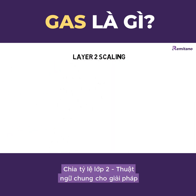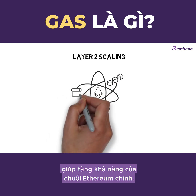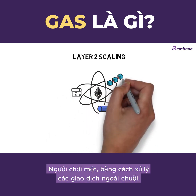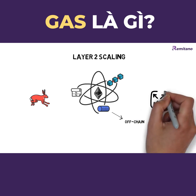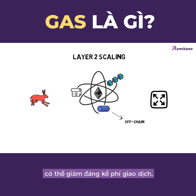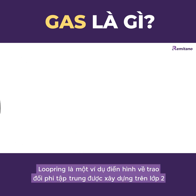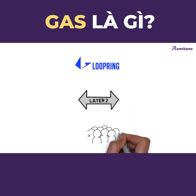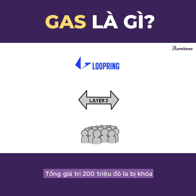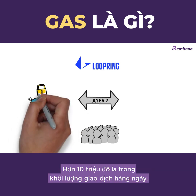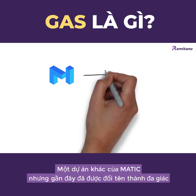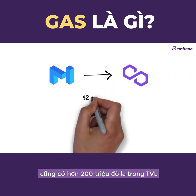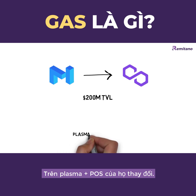Layer 2 scaling is a collective term for solutions that help increase the capabilities of the main Ethereum chain — Layer 1 — by handling transactions off-chain. Besides improving transaction speed and throughput, Layer 2 solutions can greatly reduce transaction fees. Loopring is a good example of a decentralized exchange built on Layer 2, recently hitting $200 million in total value locked and over $10 million in daily trading volume. Another project, Matic — recently rebranded to Polygon — also hit over $200 million in TVL.